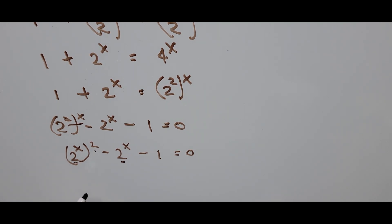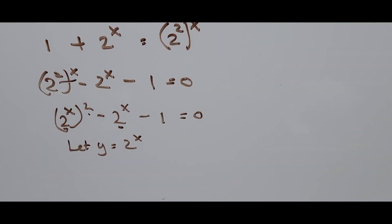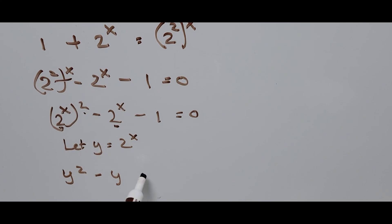We're introducing a new variable to represent 2 to the power of x. Let y equal 2 to the power of x. So the equation now becomes y squared minus y minus 1 equals 0.